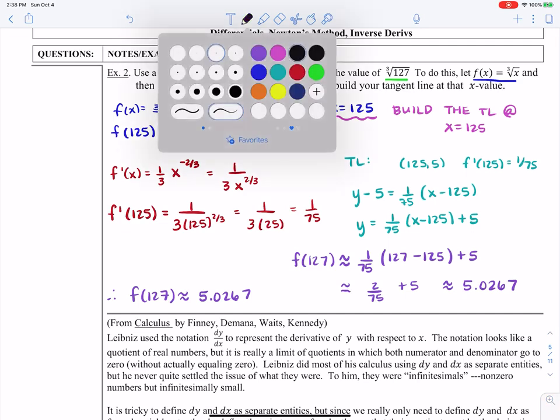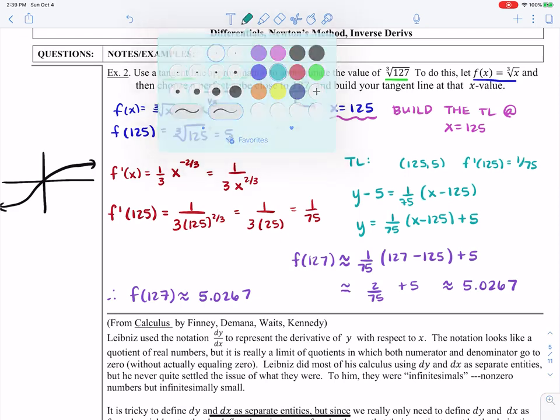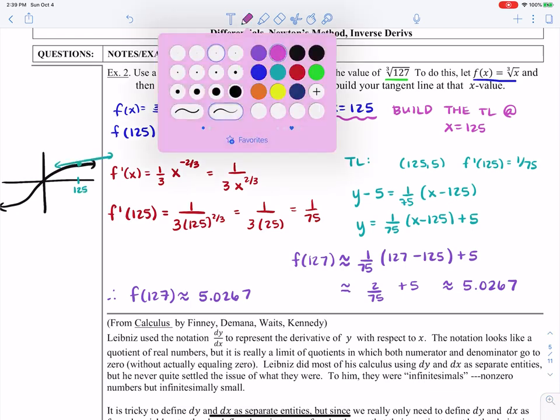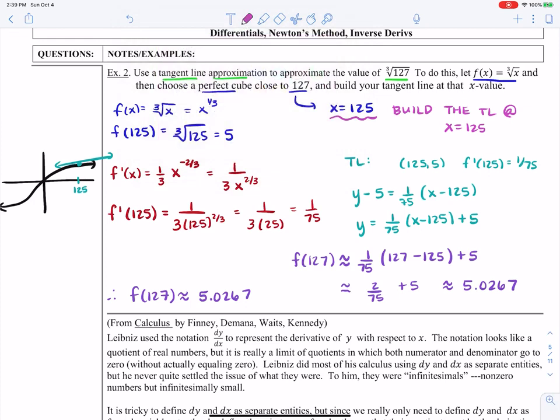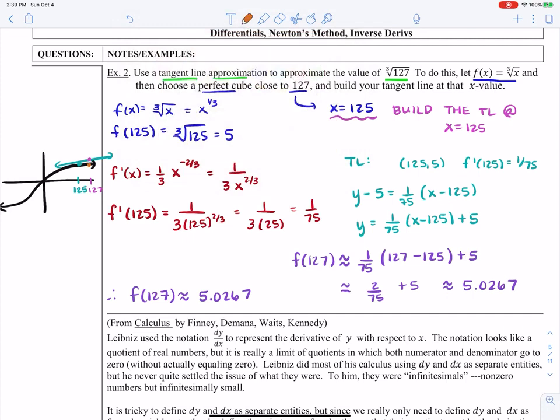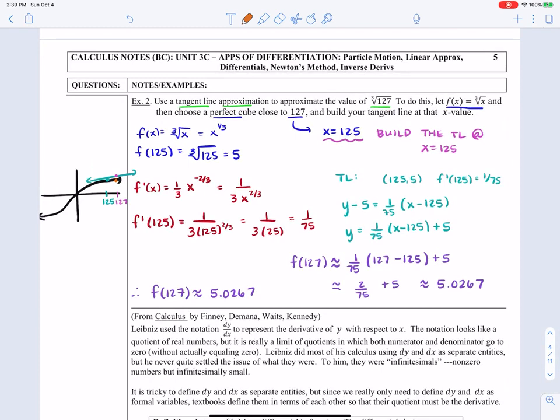So visually, what you've just done is we took our cube root function. We went to approximately 125 and we built a tangent line there. We plugged in 127 into the tangent line. And we use that to approximate the real value of the function. So that's where I'm going to stop. We'll only cover the tangent line approximations. And when we pick up in class, we'll talk about some differentials.